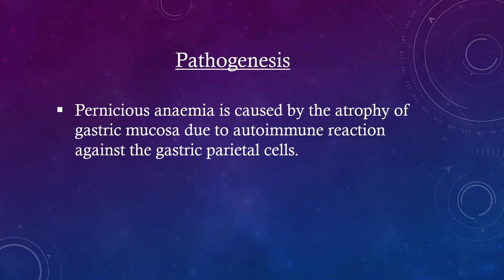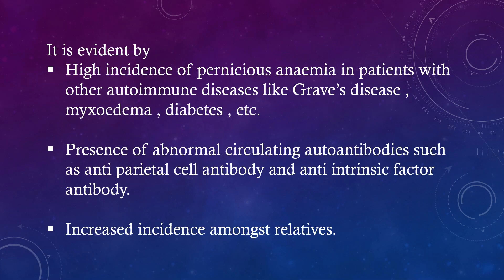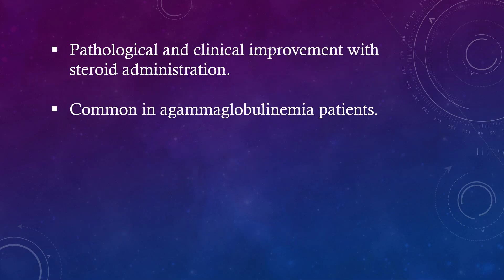Pathogenesis. Pernicious anemia is caused by the atrophy of gastric mucosa due to autoimmune reaction against the gastric parietal cells. It is evident by high incidence of pernicious anemia in patients with other autoimmune diseases like Graves' disease, myxoedema, diabetes, etc. Presence of abnormal circulating autoantibodies such as antiparietal cell antibody and anti-intrinsic factor antibody. Increased incidence among its relatives. Pathological and clinical improvement with steroid administration, common in agamma globulinemia patients.